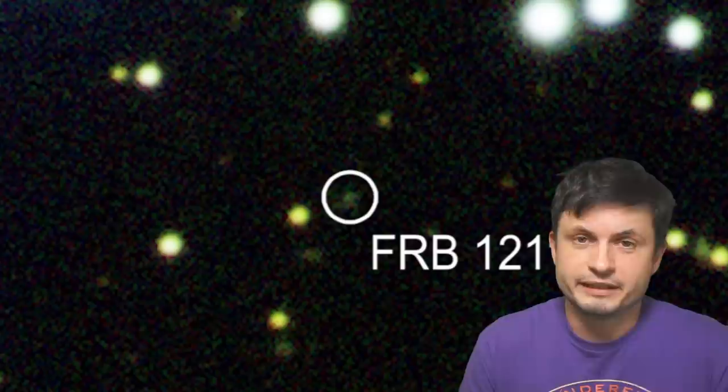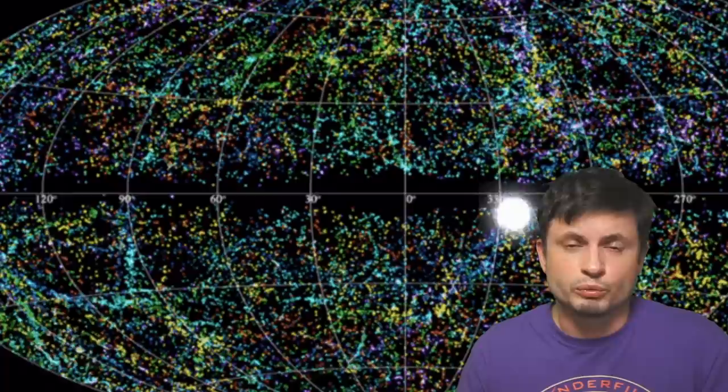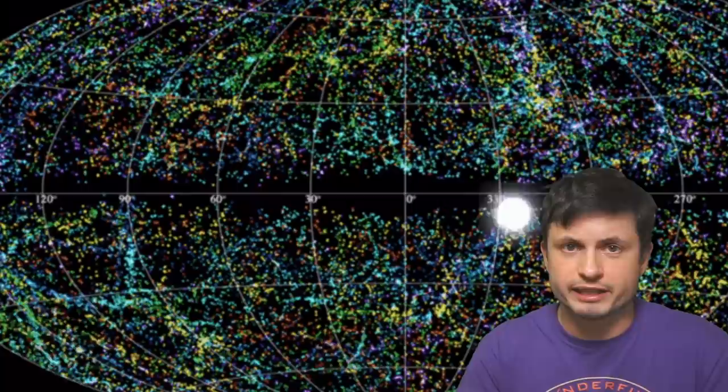Specifically the exact same spot where the original FRB was detected as well. And these 1600 signals were detected in just about 59 hours of total observations. With at least one hour during the observations being extremely hyperactive. 122 fast radio bursts occurred during that hour. That's basically one every 30 seconds.